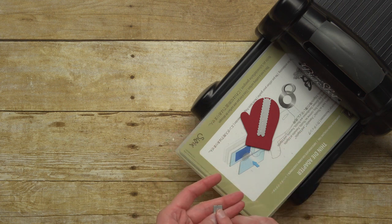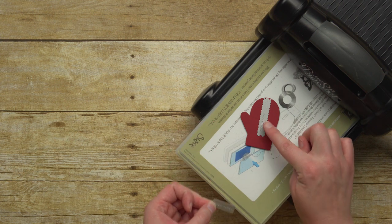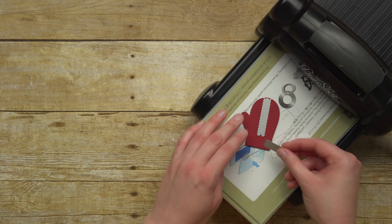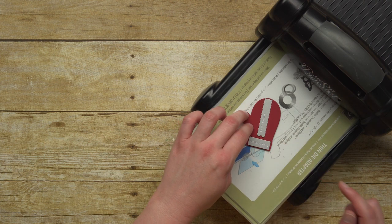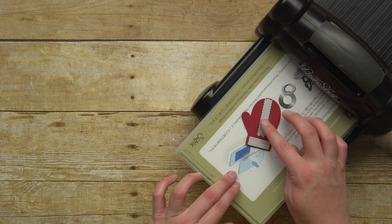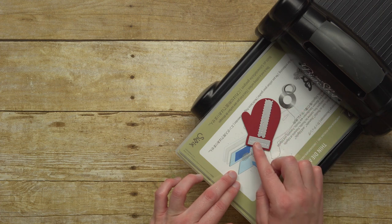Be really careful when you're putting these on to make sure that your two pieces do not overlap. You could damage your framelit if you layer these on top of each other, so make sure that there is plenty of space between them.